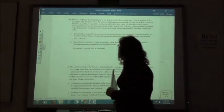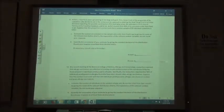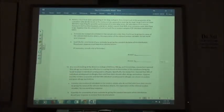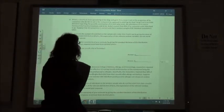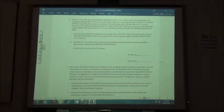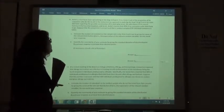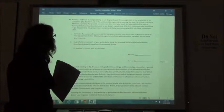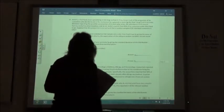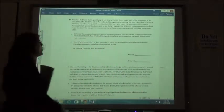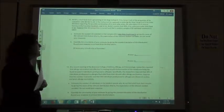Alright, Anita's fast food chain specializes in hot dogs and garlic fries. They're keeping track of the proportion of the customers who decide to eat in the restaurant as opposed to ordering food to go, so they can make decisions regarding the possible construction of an in-store play area, the attendance of its mascot Sammy at the franchise location and so on. Anita reports that 45% of its customers order their food to go. Suppose that this proportion is correct and that a random sample of 50 individual customers is taken. So, estimate the number of customers in the sample who ordered their food to go by giving the mean.